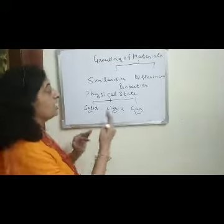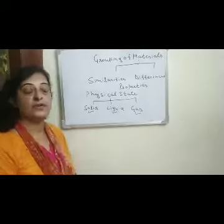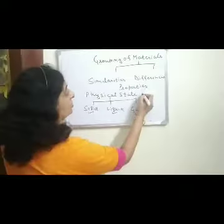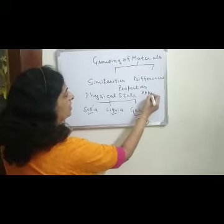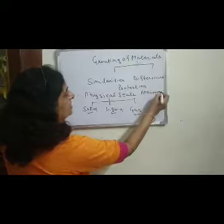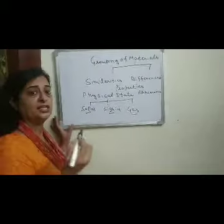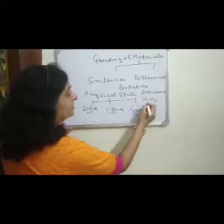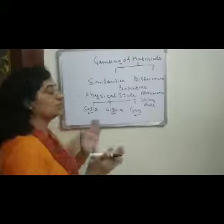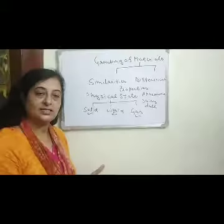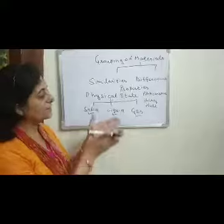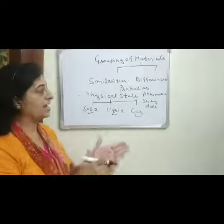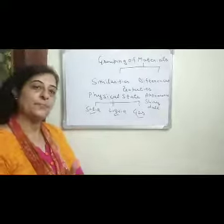In the same way, we can also classify objects on the basis of their appearance. This means whether the object has a shiny surface or a dull surface. Shiny objects can be grouped together, and objects with a dull surface form a separate group.